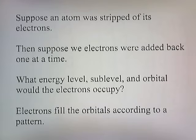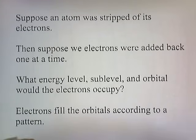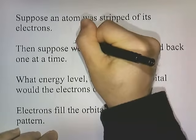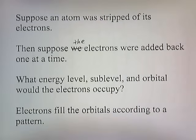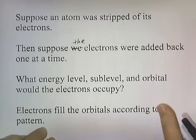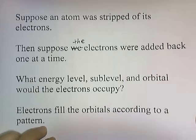Now suppose an atom was stripped of its electrons, and the electrons were added back one at a time. What energy level, sub-level, and orbital would the electrons occupy? The electrons fill the orbitals according to a pattern.